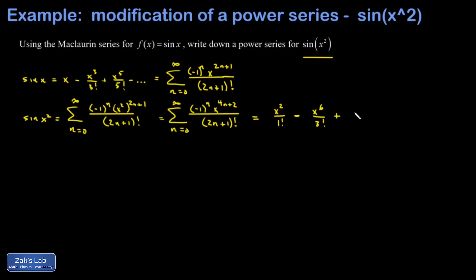I plug in n equals 2, and I get a positive term, and that's going to be x to the 10th over 5 factorial. And if I go back to my expanded form for the sine function, I can see that all I've done there is replace x with x squared in every one of those terms, as it should be.